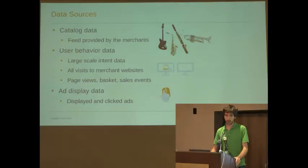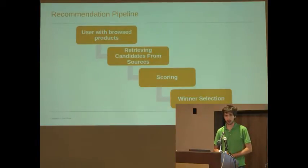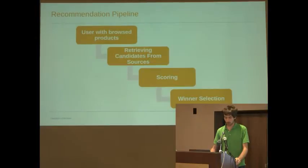And the ad display data — basically we know when we display a product in an ad and when the ad has been clicked. The way we do recommendation is that we receive a request from a user with the products that they've seen. We retrieve candidates from some precomputed sources that are computed offline. We score in real time the candidates from the several sources and we select the winners.